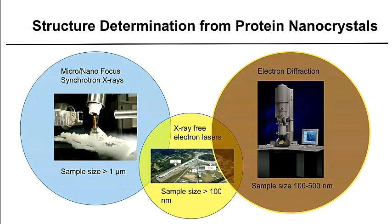Although I'll be focusing on electron diffraction, protein nanocrystals can also be interrogated by synchrotron X-rays and X-ray free electron lasers. Synchrotron X-rays are a continuous intermediate intensity source requiring a relatively large sample size, greater than a micron. X-FELs, because they emit very bright pulses at short intervals, can use much smaller samples on the order of 100 nanometers. And because electrons interact with matter much more strongly than photons, no pulsing is required, and the sample size can be very small — on the order of 100 to 500 nanometers.